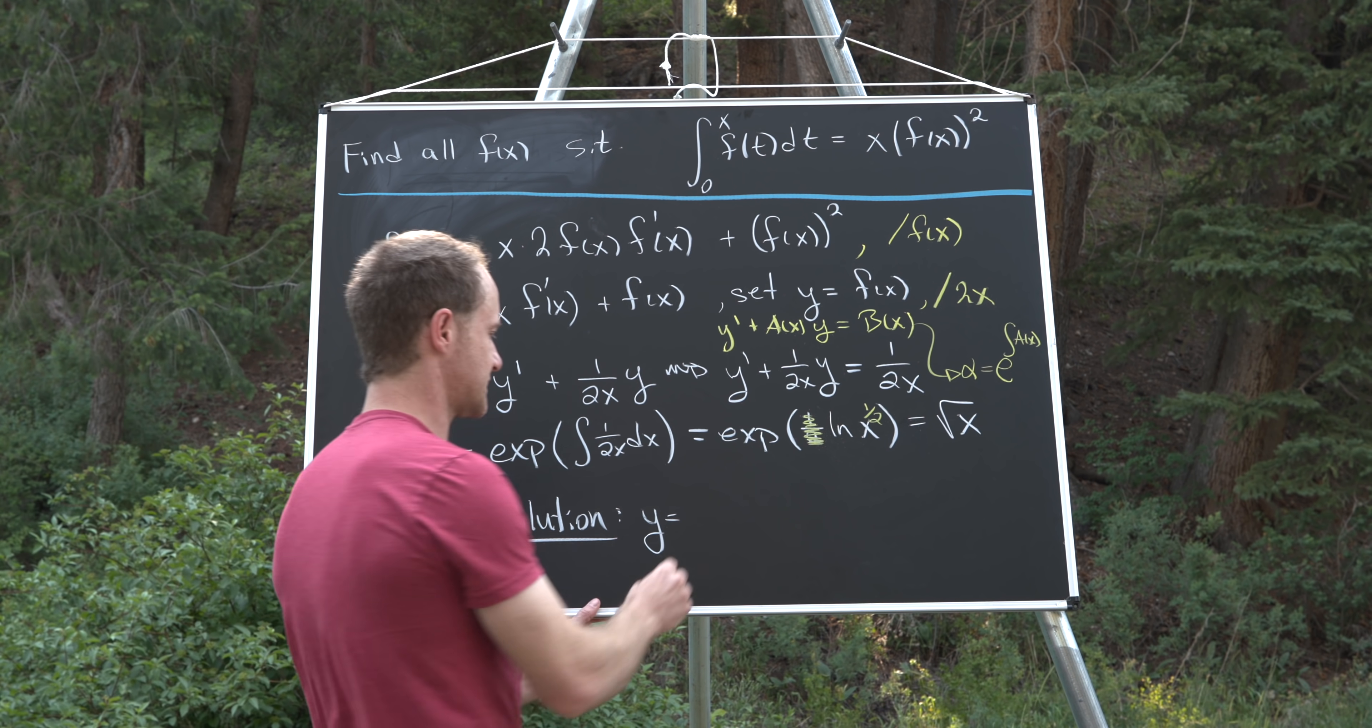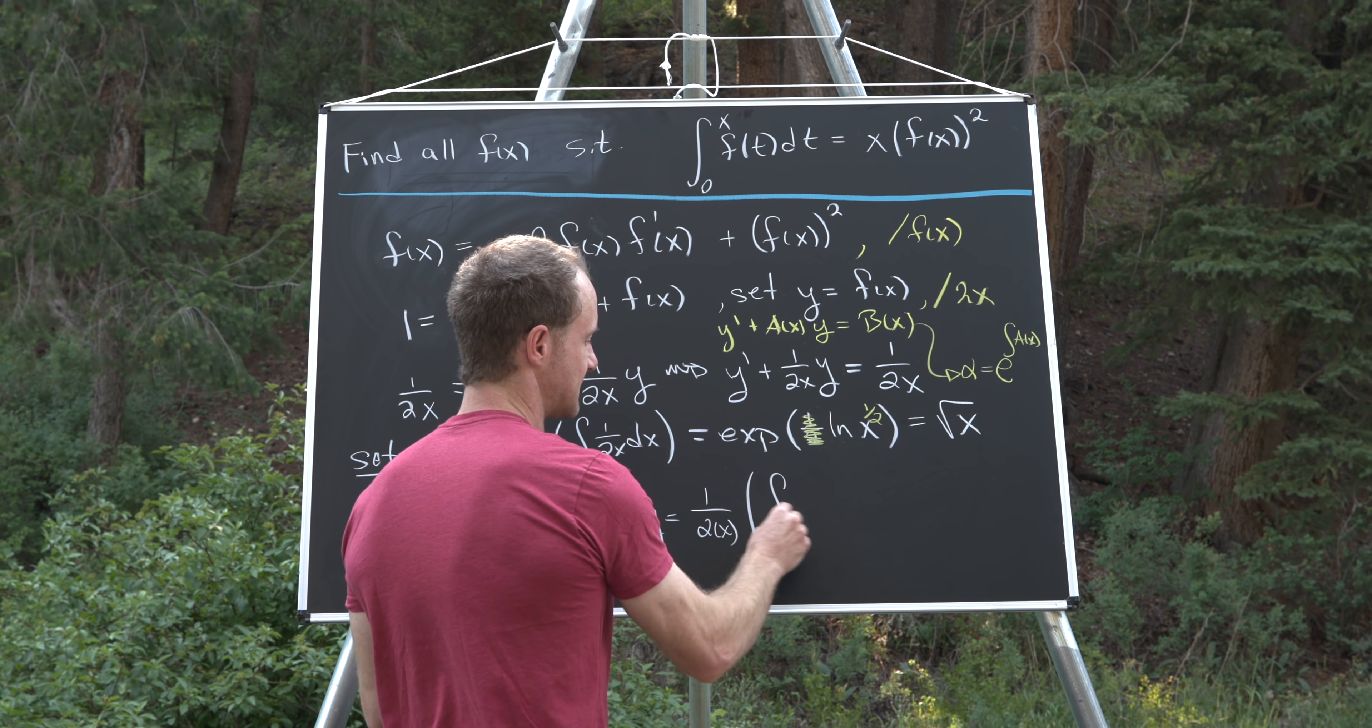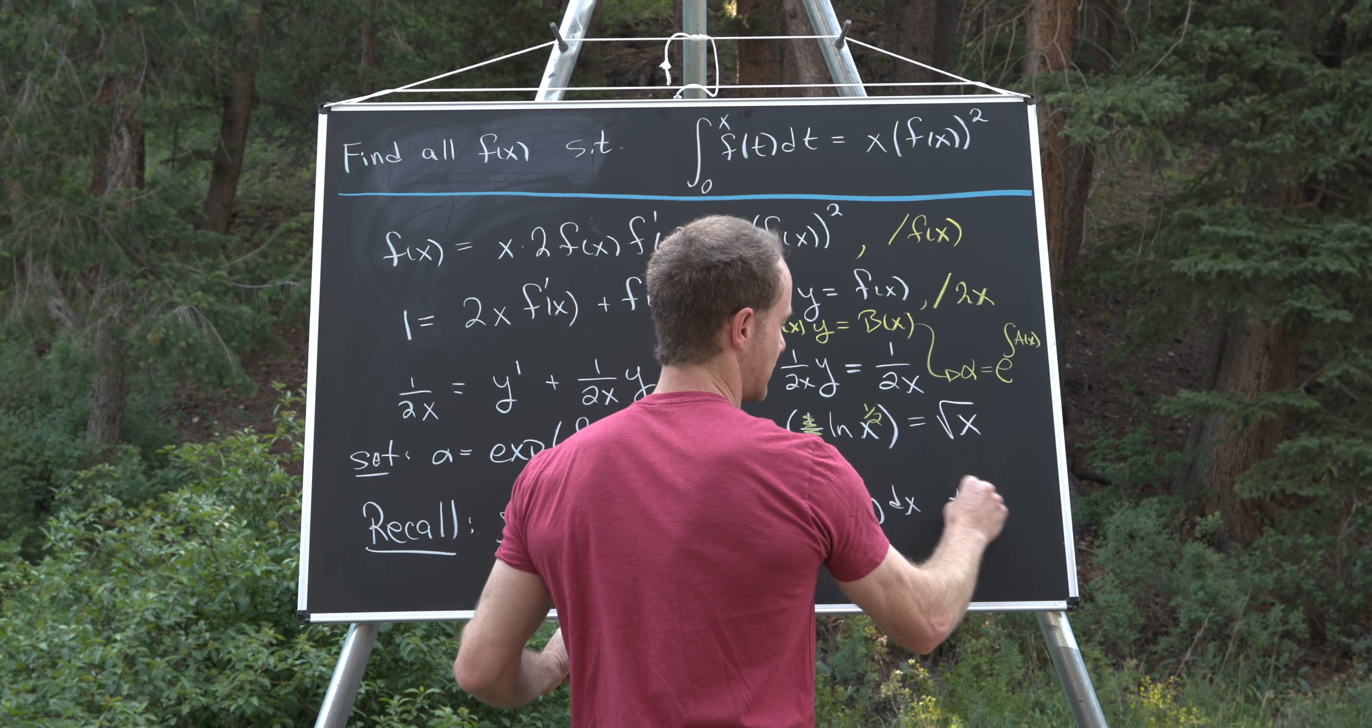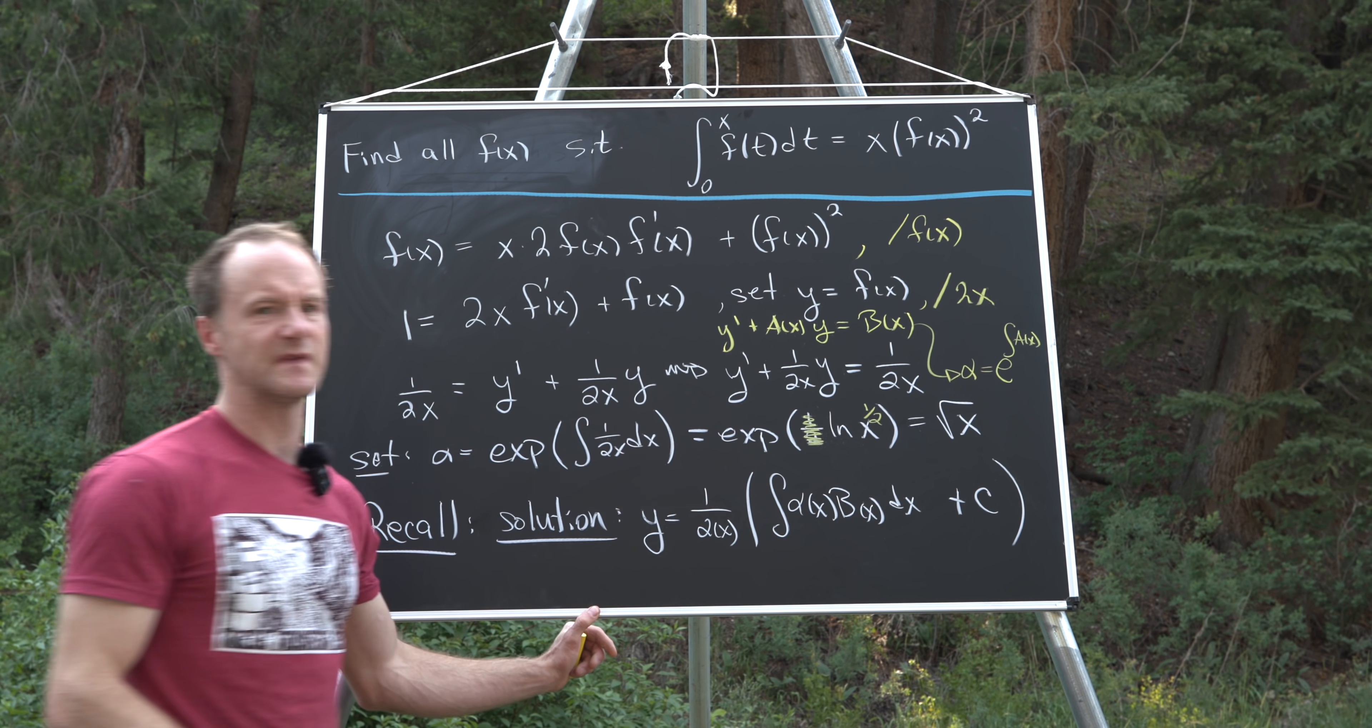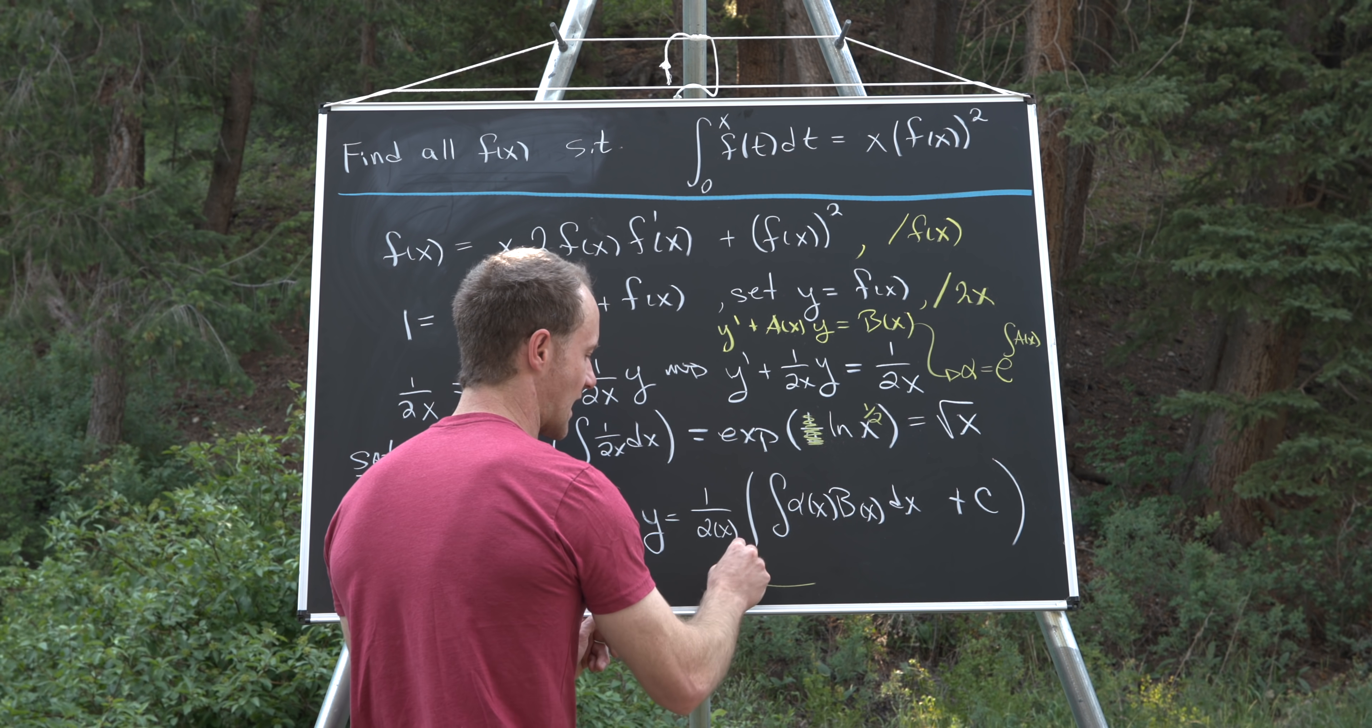So it's y equals 1 over alpha of x times the integral of alpha of x times b of x dx plus some constant. That's a constant from solving the differential equation.